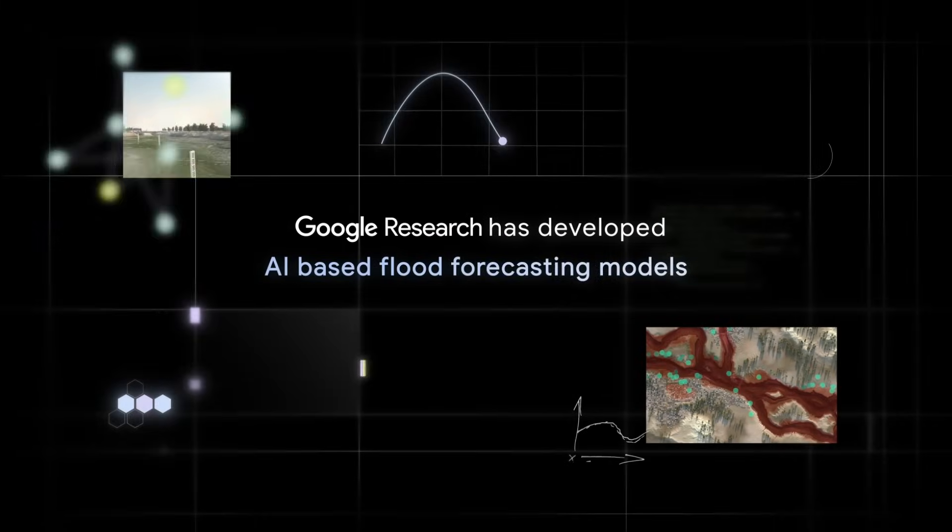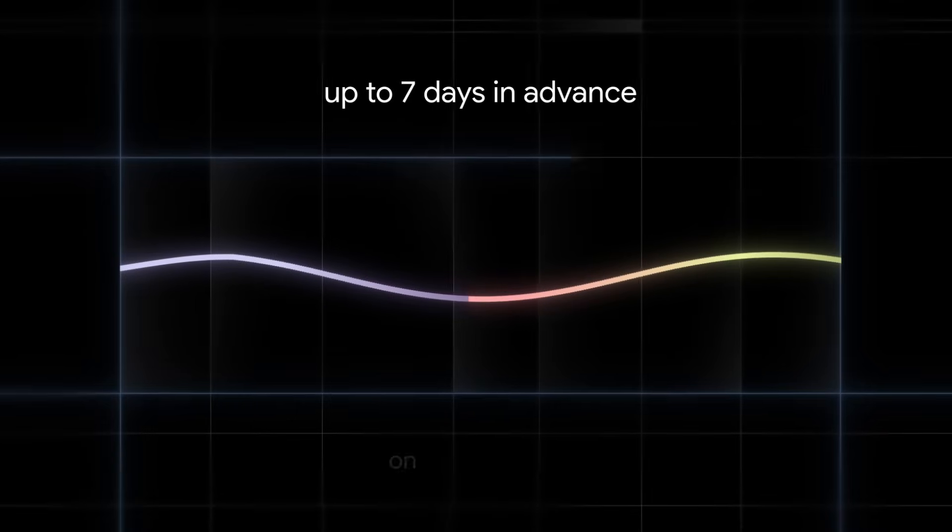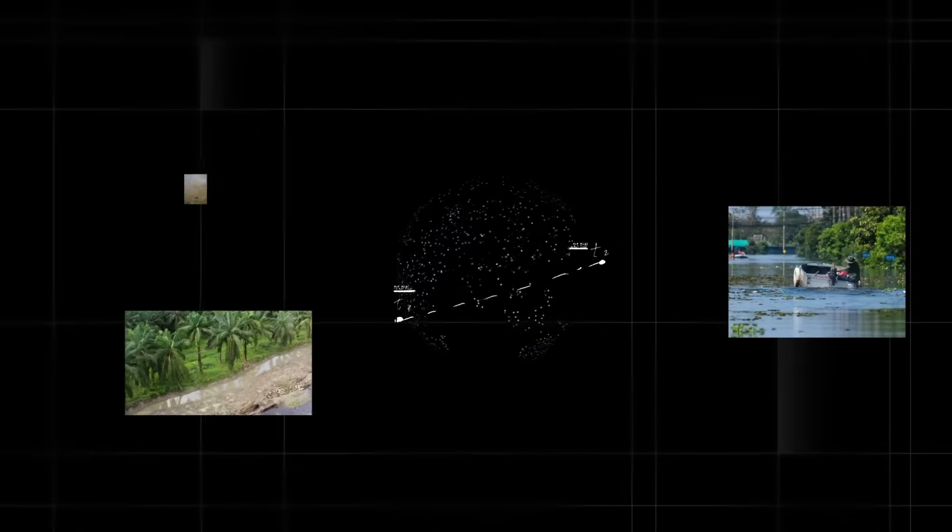Google Research has developed AI-based flood forecasting models that can generate accurate river flooding forecasts up to seven days in advance, on a global scale, even in areas where data is scarce.